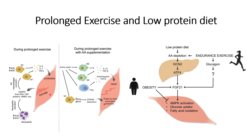Now let us understand how a low protein diet affects individuals. A low protein diet creates a condition where there is amino acid depletion, which triggers the GCN2 pathway activation, leading to ATF4 pathway activation. This in turn leads to high levels of FGF21.